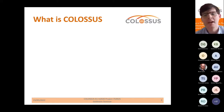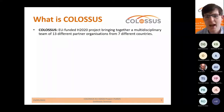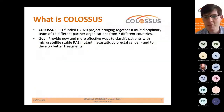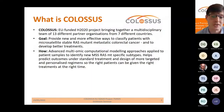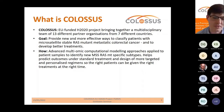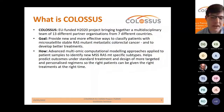The seminar is supported by Colossus — one of the Horizon 2020 projects — which brings together a multidisciplinary team of 13 different partner organizations from seven different countries. The aim of Colossus is to provide new and more effective ways to classify patients with microsatellite-stable RAS-mutant metastatic colorectal cancer, and to develop better treatment options for these patients by applying advanced multi-omic computational modeling approaches to identify new subtypes.